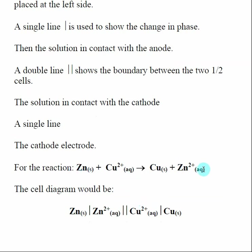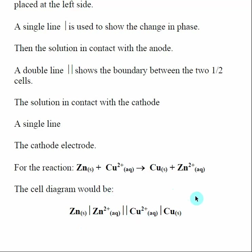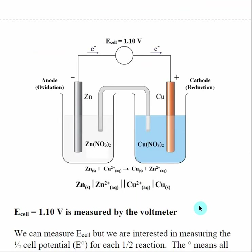One key skill is that if you're given a redox reaction, you should be able to draw the electrochemical cell, and more importantly, if you're given the cell diagram, you should be able to write the reaction. If I give you the cell diagram, you should be able to identify the two half reactions — you still need to balance them for charge and add them together, but that is a skill you should be able to do.